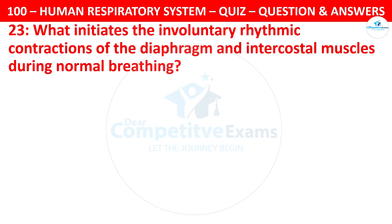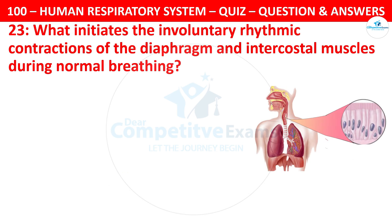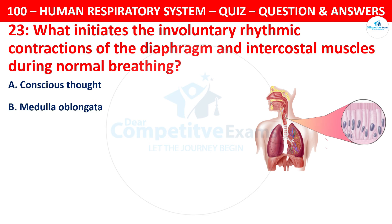Question 23. What initiates the involuntary rhythmic contraction of the diaphragm and intercostal muscles during normal breathing? Options are: conscious thought, medulla oblongata, epiglottis, or phrenic nerve.